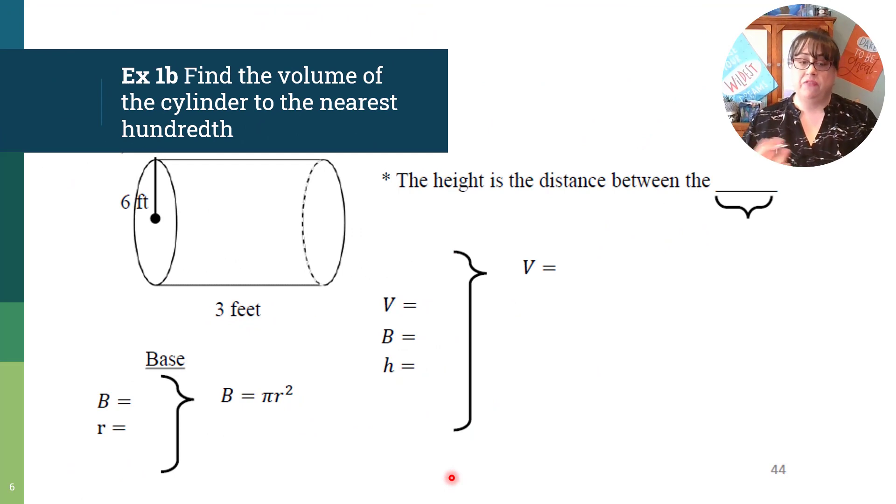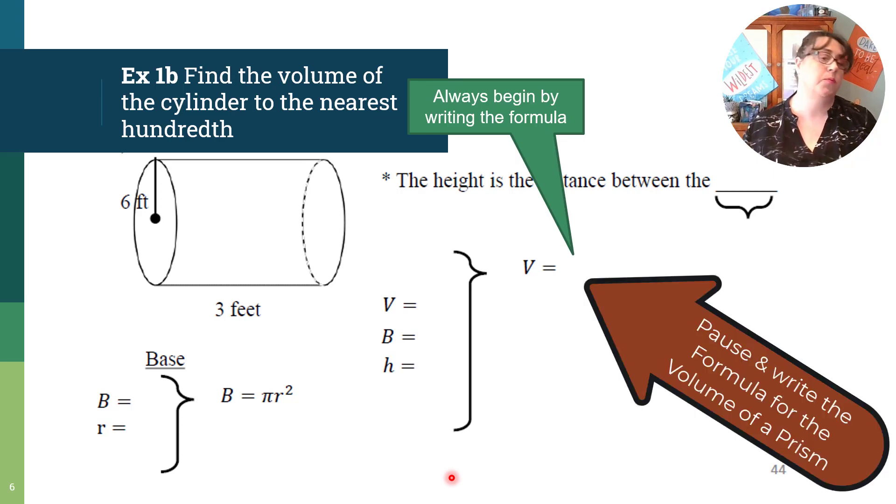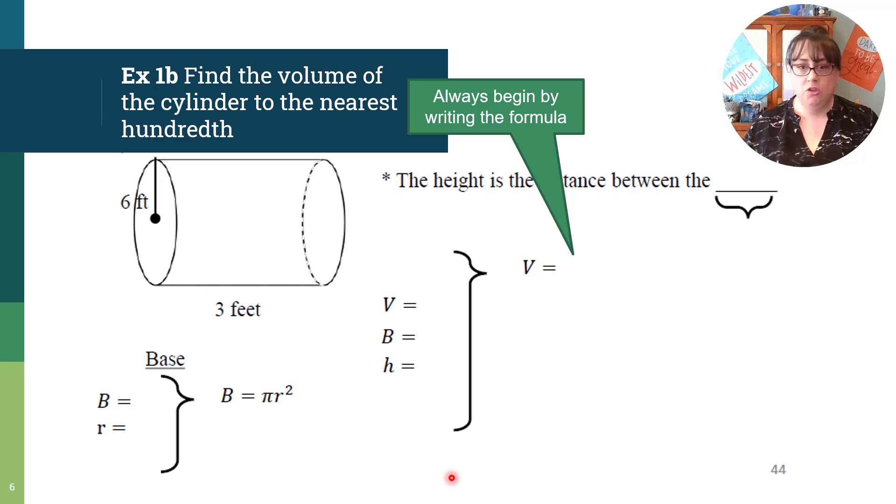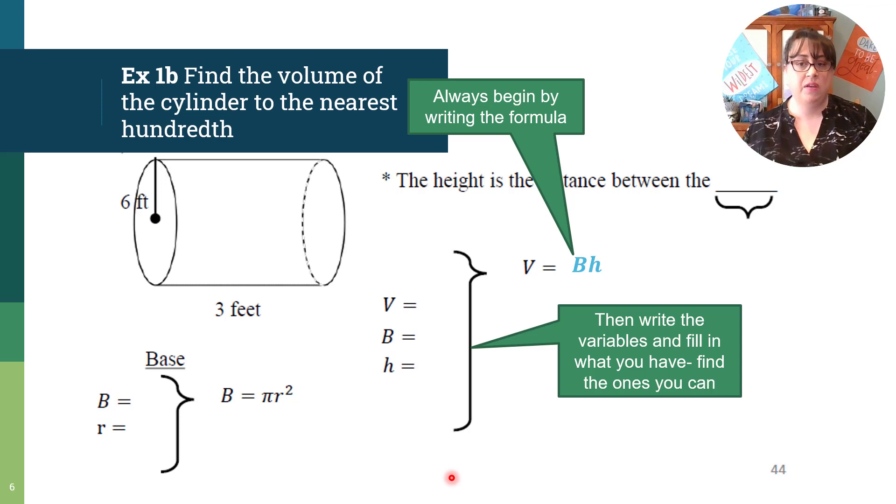So now let's look at another one. I've taken away all of those extra little parentheses, and so it looks a little more blank. So where do we start these problems? Every single time, we always begin by writing the formulas. What I'd like you to do right now is pause, write that formula, and then come on back. Great. You should have written V equals base area times the height. So now that you wrote that, let's go find some things that we know. Write those variables and fill in what you have. Find the ones that you can.